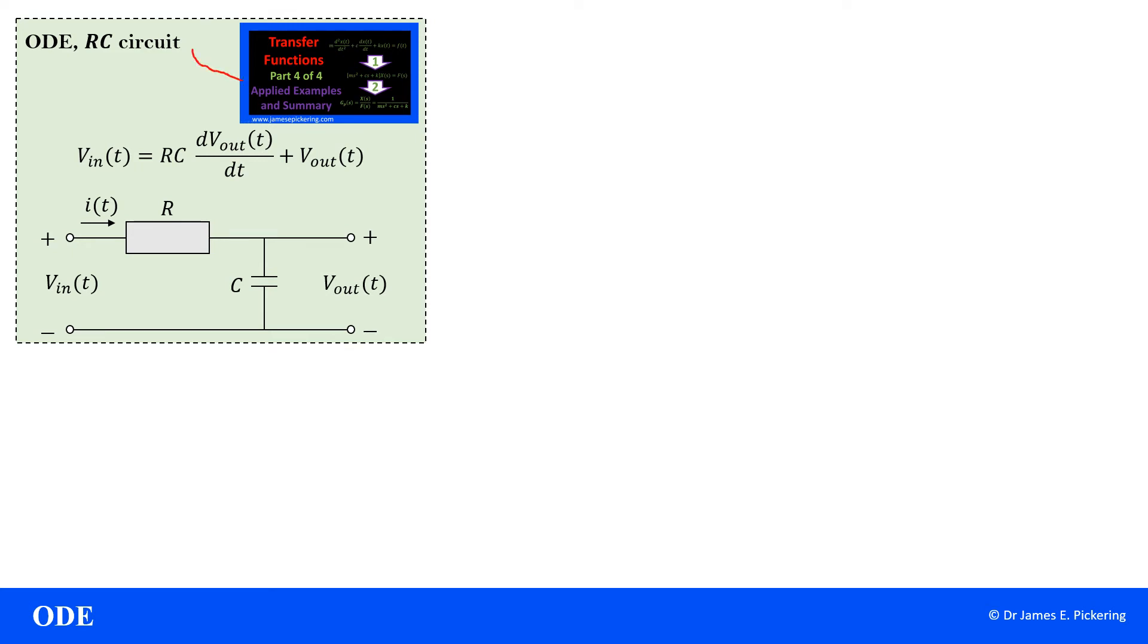Hi, in part four of all the videos on transfer functions, I introduce you to the ordinary differential equation for the RC circuit given here. RC circuit, also known as resistor capacitor circuit, and this is a type of low pass filter. And you can see here the circuit diagram with resistor and capacitor. So the task from part four was to effectively convert this into transfer function form.